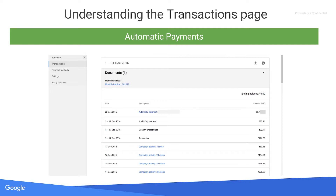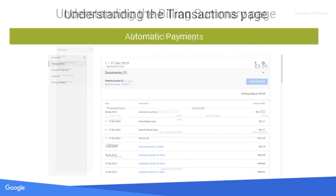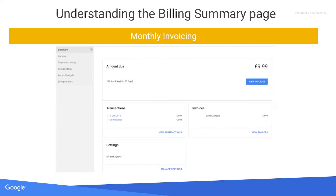If you're using monthly invoicing, your billing summary will have a card to show you the total amount due. You can also see cards for your recent transactions, your payment methods, and your settings.